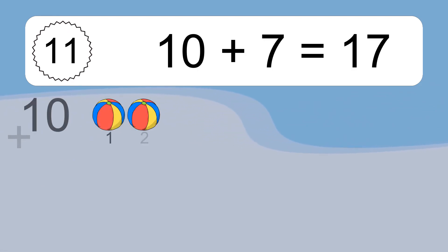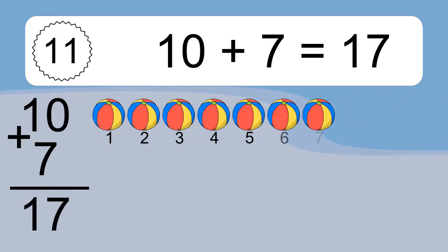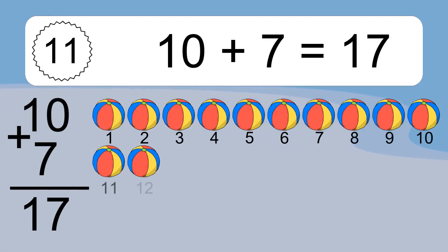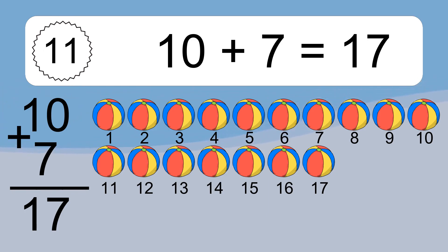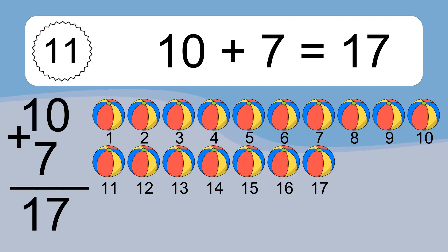10 plus 7 equals what? 10 plus 7 equals 17. Let's count it: 1, 2, 3, 4, 5, 6, 7, 8, 9, 10, 11, 12, 13, 14, 15, 16, 17.